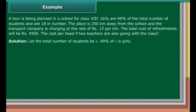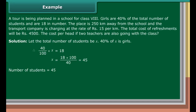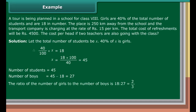Solution: Let the total number of students be X. 40% of the total number of students equals 18 girls, and the number of boys is equal to 45 minus 18, which is 27. The ratio of the number of girls to the number of boys is 18 is to 27, which is equal to 2 upon 3.